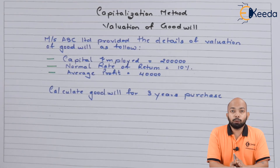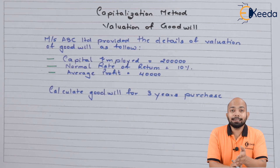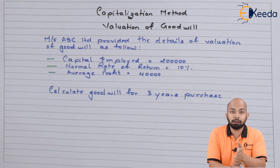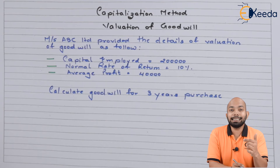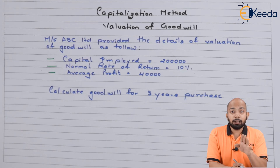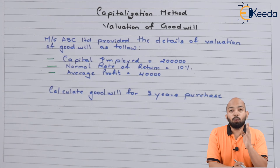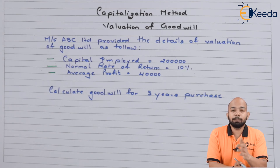Since the average profit is already given, we don't need to calculate it separately. If instead the question provided profits for each of the last five years, you would first check for an increasing or decreasing trend. If no trend exists, use the simple average method. If a trend exists, use the weighted average method — assign weights based on recency, multiply each profit by its weight, and derive the weighted average profit.